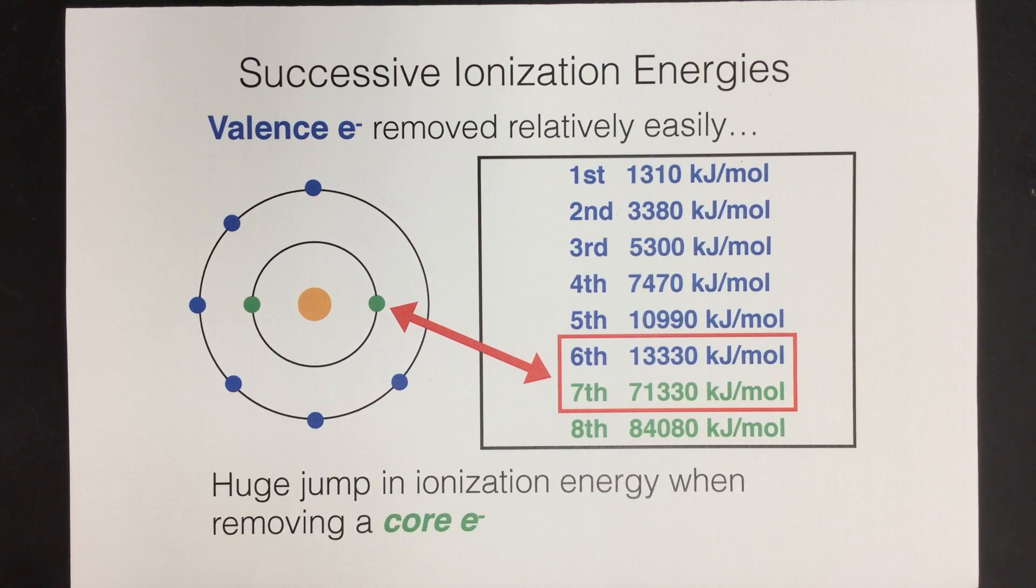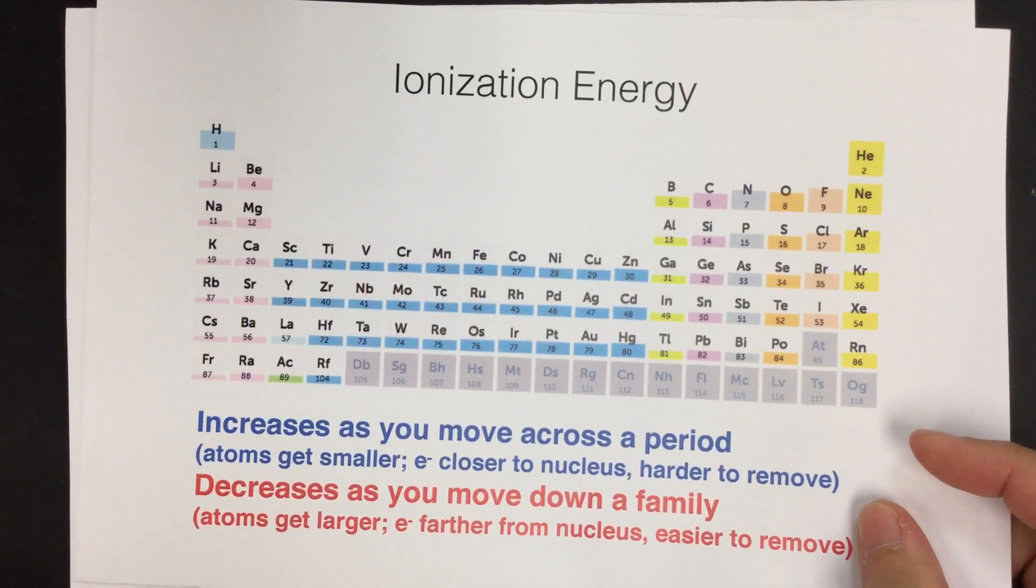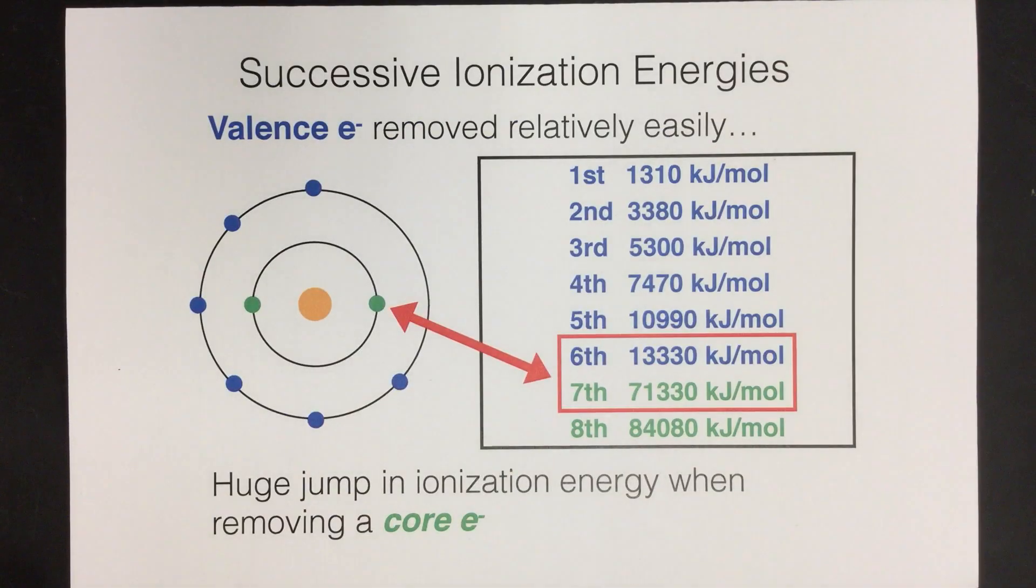So we've talked about ionization energy being the amount of energy required to remove the outermost electron. That was in another video, and that was a periodic trend. We can actually continue to remove electrons, and that's called successive ionization energy.